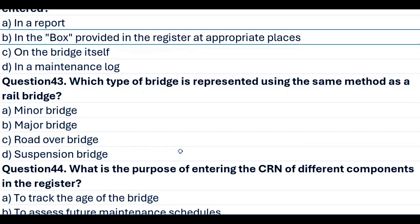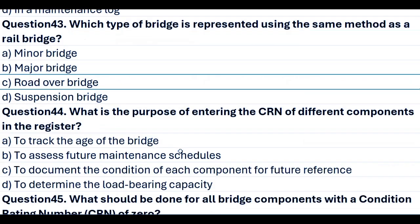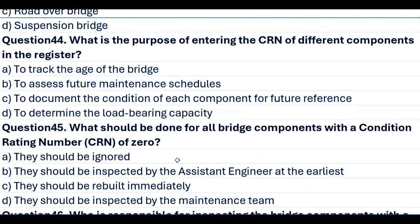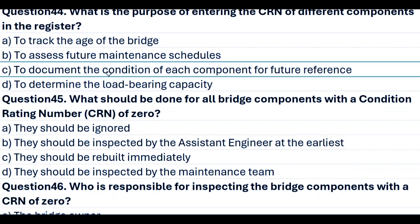Question 43. Which type of bridge is represented using the same method as a rail bridge? A. Minor bridge. B. Major bridge. C. Road over bridge. D. Suspension bridge. Answer C. Road over bridge. Question 44. What is the purpose of entering the CRN of different components in the register? A. To track the age of the bridge. B. To assist future maintenance schedules. C. To document the condition of each component for future reference. D. To determine the load bearing capacity. Answer C. To document the condition of each component for future reference.